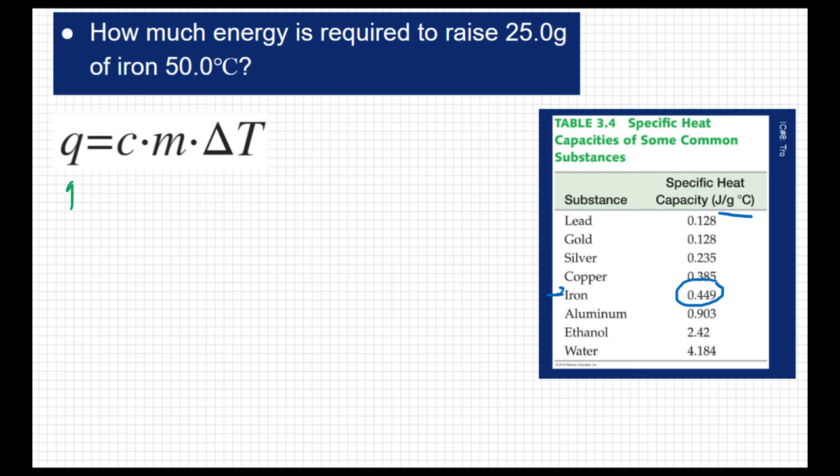Q is heat, or heat energy, and that's going to be measured in joules. C is the specific heat value that we just talked about, and that is measured in joules per gram degree Celsius.